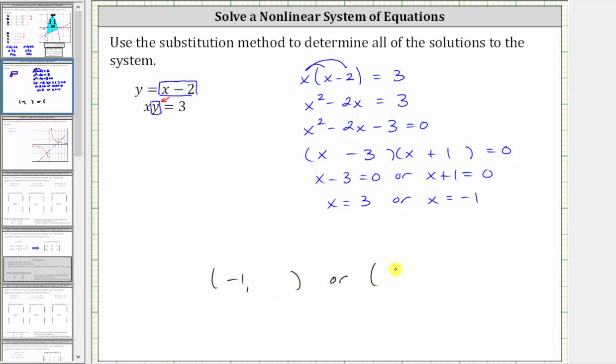And the second solution will have an x value of positive three. And again, we still have to find the corresponding y value. To find the corresponding y values, we need to substitute negative one for x and three for x back into one of the original equations. It doesn't matter which equation we use. Let's go ahead and use the first equation where we know y must equal x minus two.